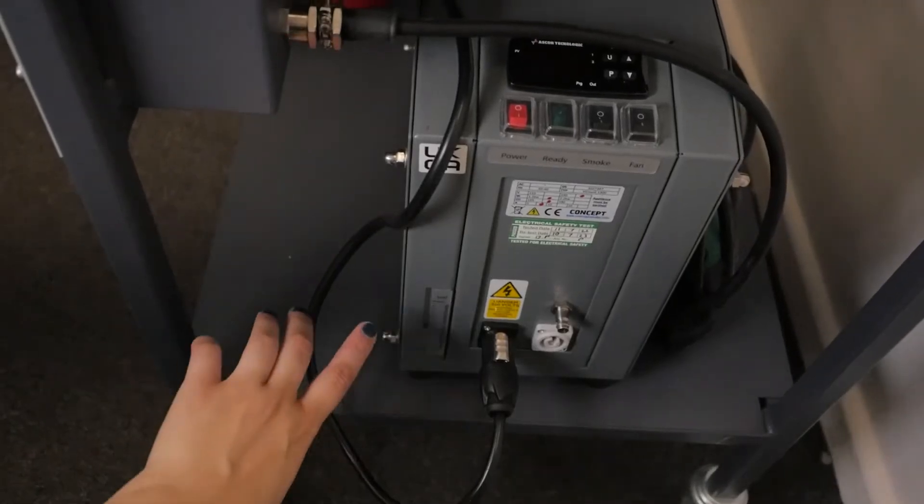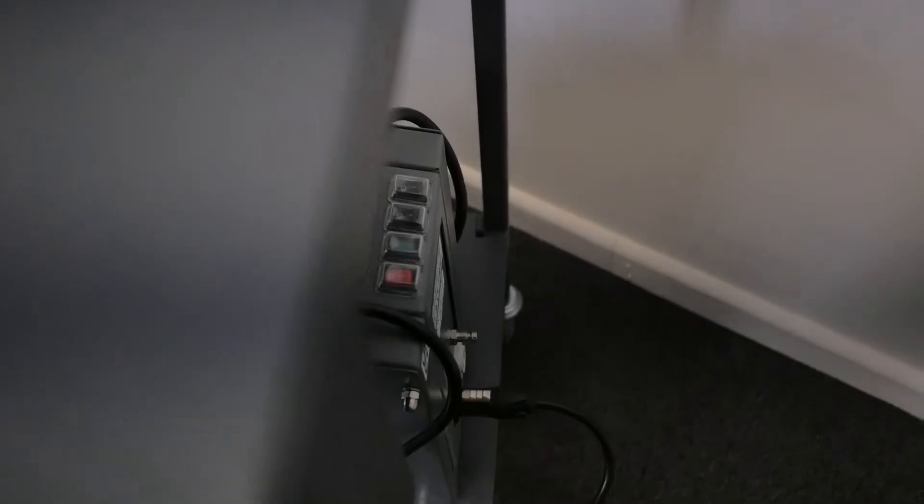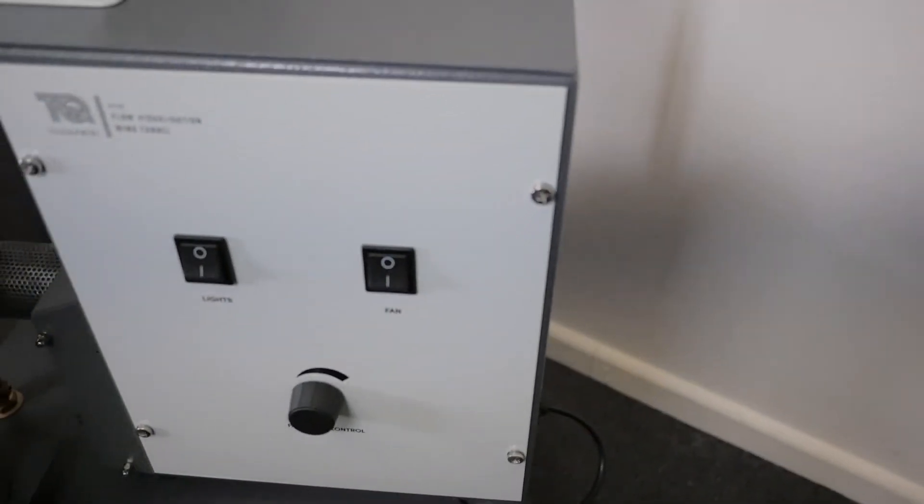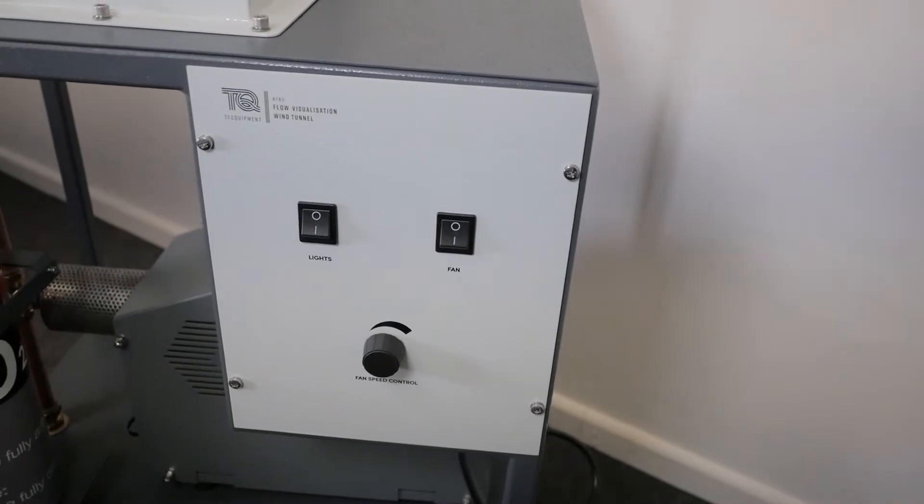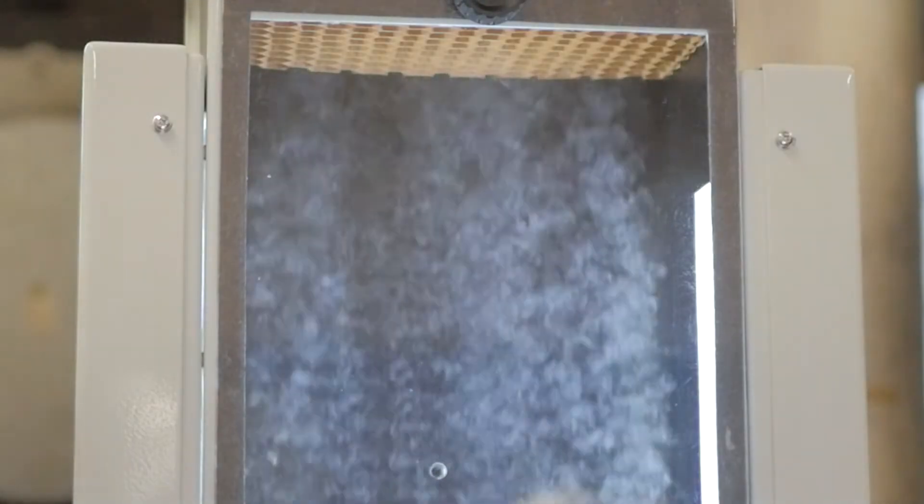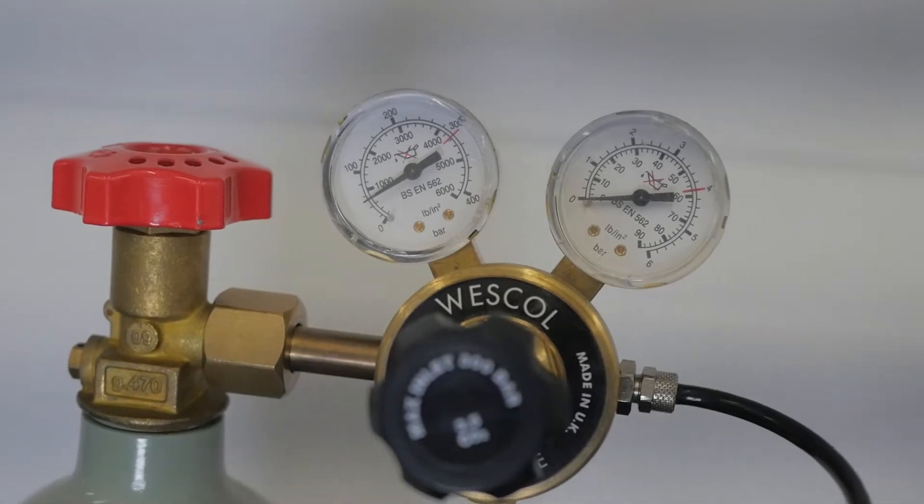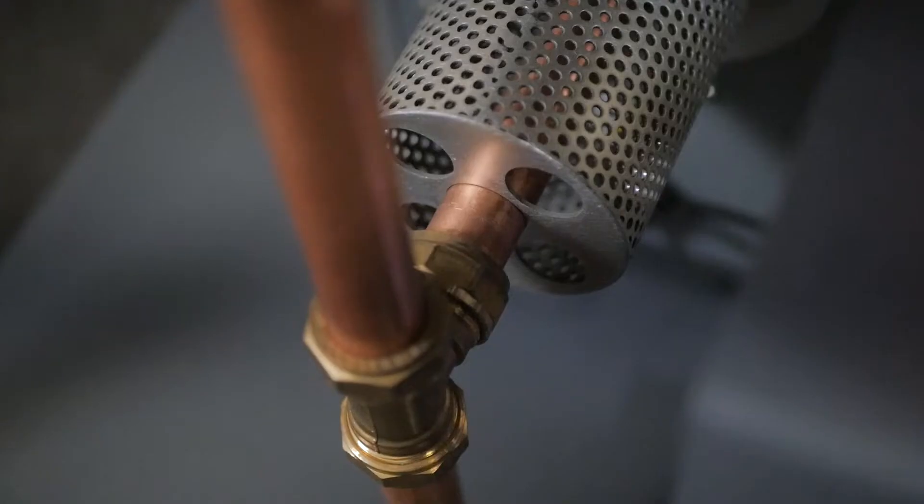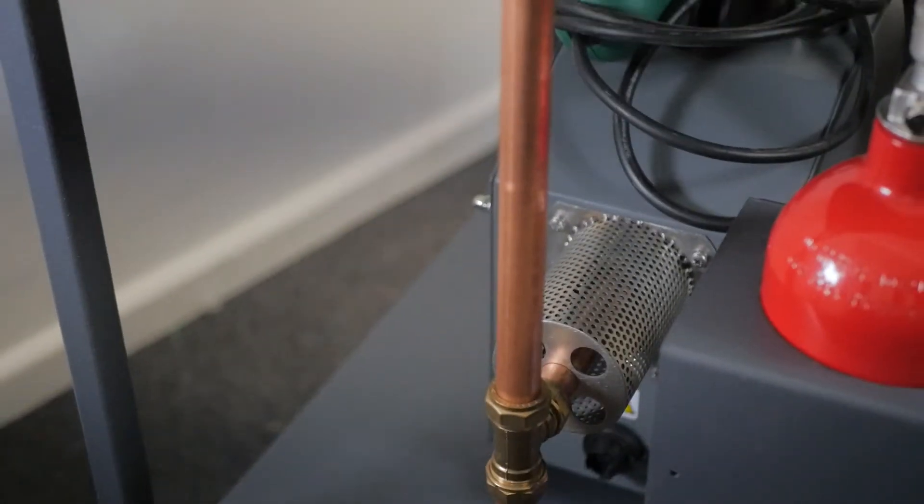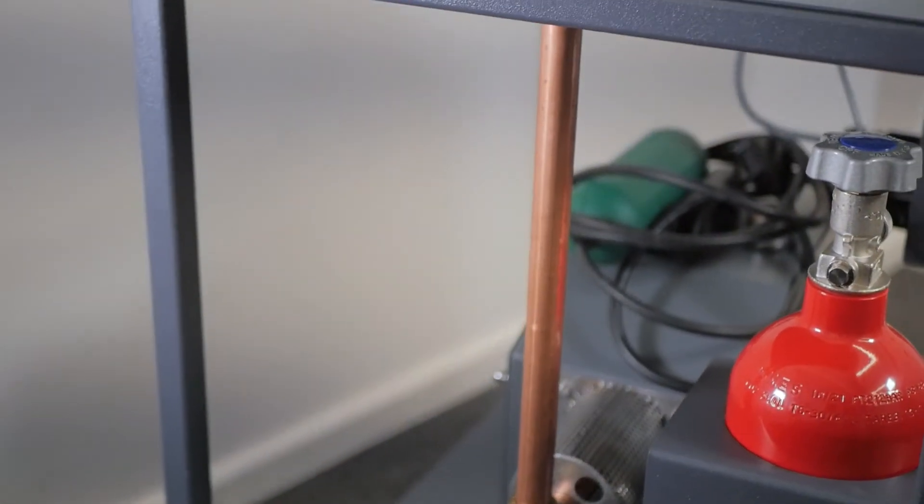Here we have the smoke generator that heats up droplets of smoke oil and forms vapours. The vapour is then forced from the smoke generator by compressed carbon dioxide gas from a small cylinder. To enter the smoke pipe, the smoke passes through the generator outlet and smoke pipe inlet.